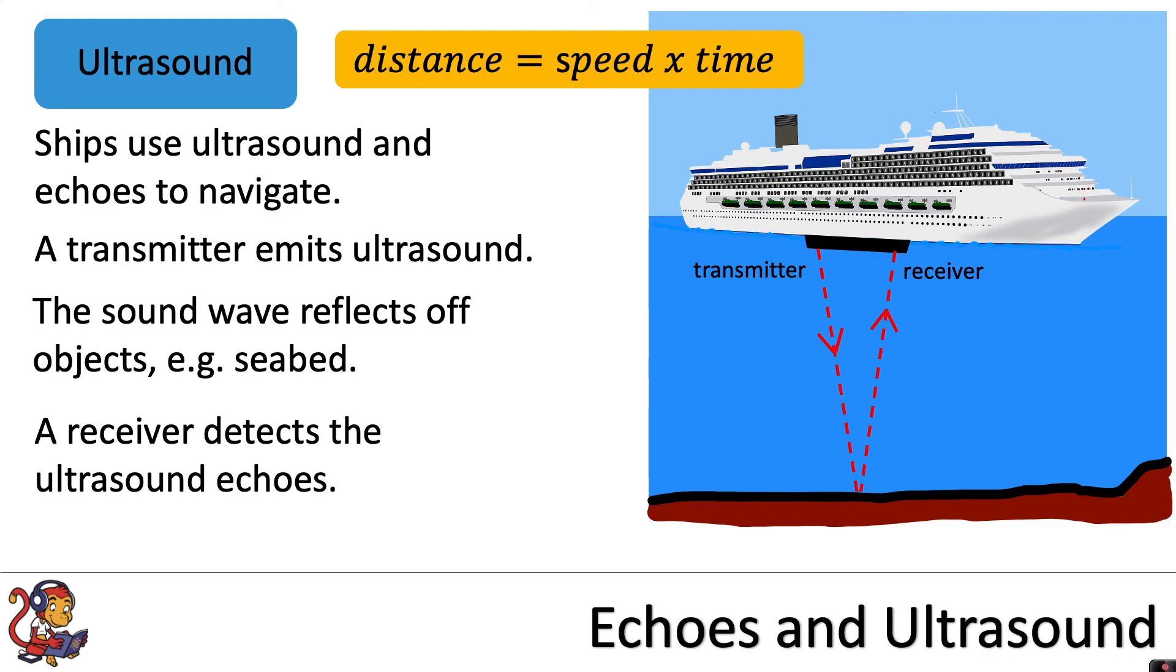There will be a computer using that distance equals speed times time equation, remembering to halve the distance at the end. It will calculate the distance that the bottom of the ship is from the seabed or other objects that it encounters. This echolocation system is called sonar.